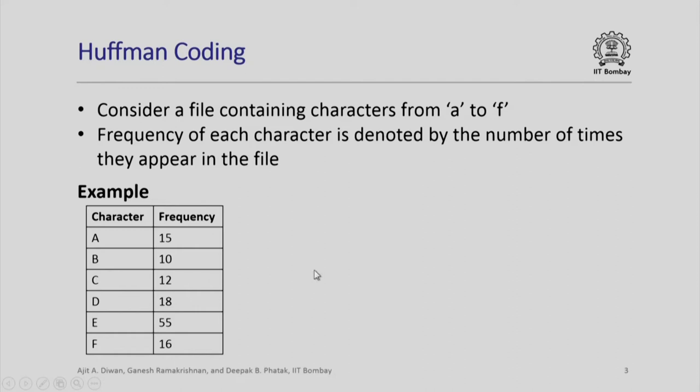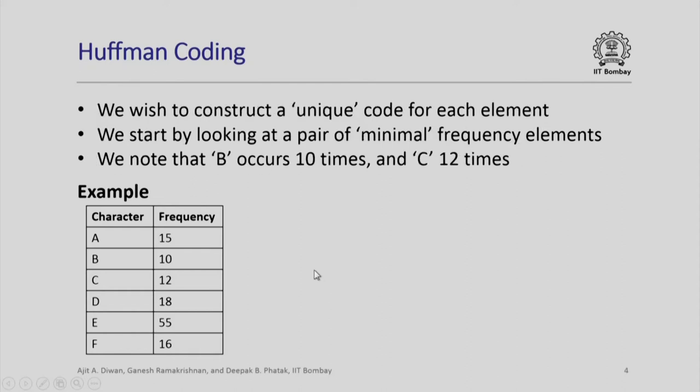We will now try and use this frequency attribute to design code for every individual character. We need to construct a unique code. We first start by looking at a pair of minimal frequency elements. We note that B occurs 10 times and C occurs 12 times. All other characters occur more frequently. These two are the minimal occurring characters in this list.